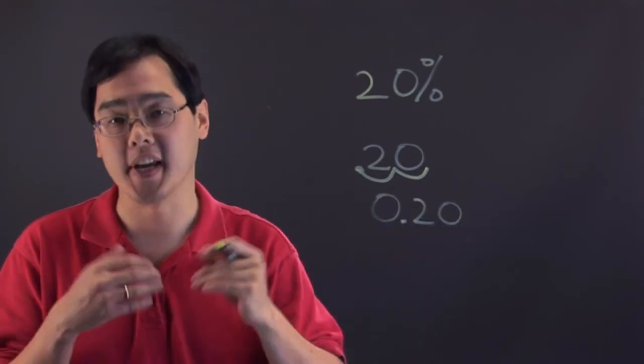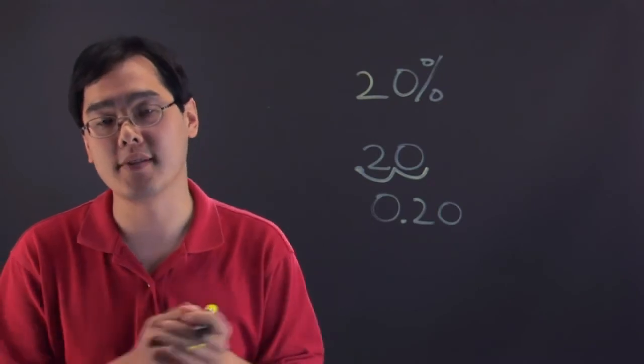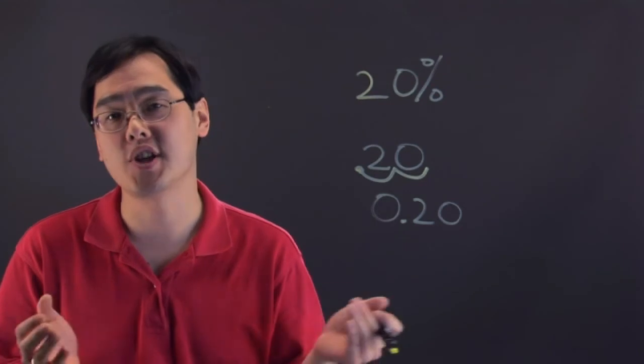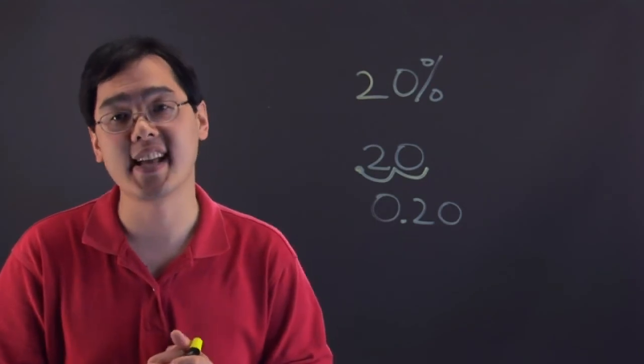So take any percentage, take the number and move it to the left two decimal places and you have your decimal always. So, I'm Jimmy Chang and that is 20% as a decimal.